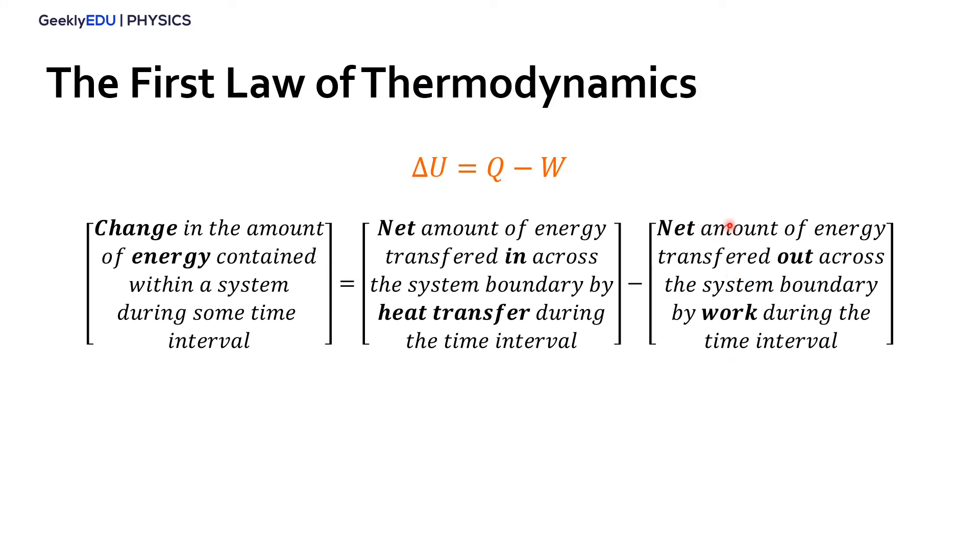So the first law of thermodynamics tells us that the change in the amount of energy contained within the system during some time interval equals the net amount of energy transferred in across the system boundary by heat transfer during the time interval minus the net amount of energy transferred out across the system boundary by work during the time interval. So we have a system here, we have heat transferred in and out and work done by the system or in the system.